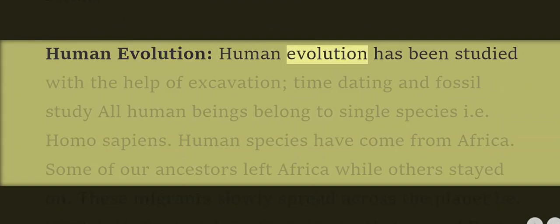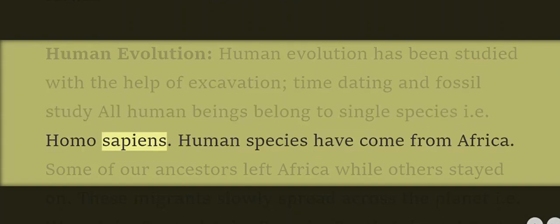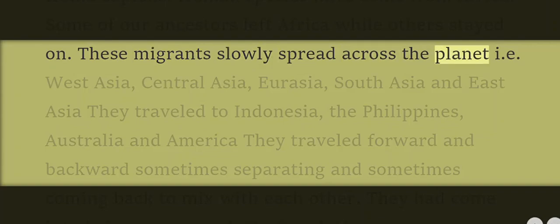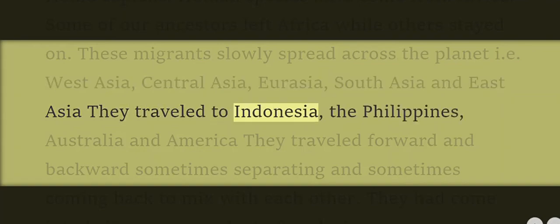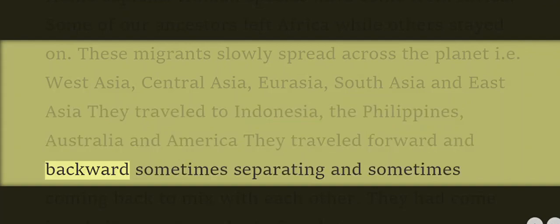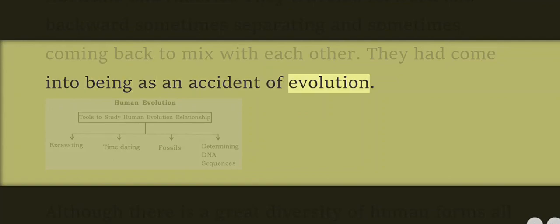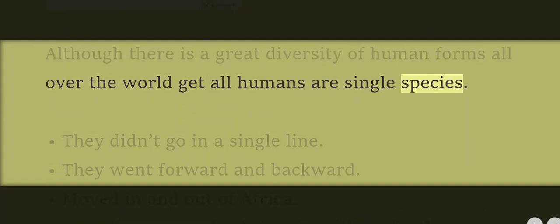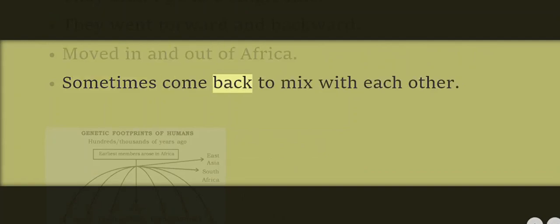Human evolution has been studied with the help of excavation, time dating, and fossil study. All human beings belong to a single species, i.e., Homo sapiens. Human species originated from Africa — some ancestors left Africa while others stayed on. These migrants slowly spread across the planet: West Asia, Central Asia, Asia, South Asia, East Asia, Indonesia, the Philippines, Australia, and America. They traveled forward and backward, sometimes separating and sometimes coming back to mix with each other. Although there is great diversity of human forms all over the world, all humans are a single species.